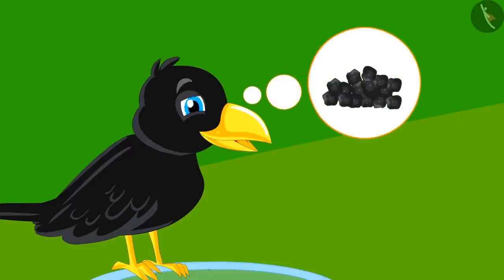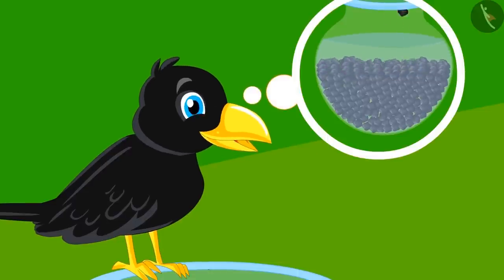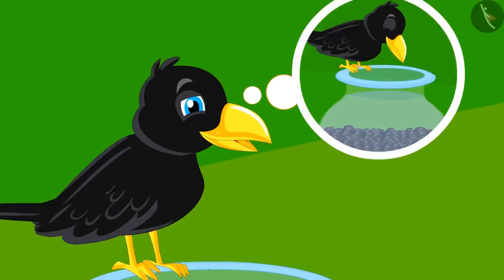The crow got an idea. He thought that if he put stones in the pitcher, the water in the pitcher will rise up and then he will be able to drink the water easily.